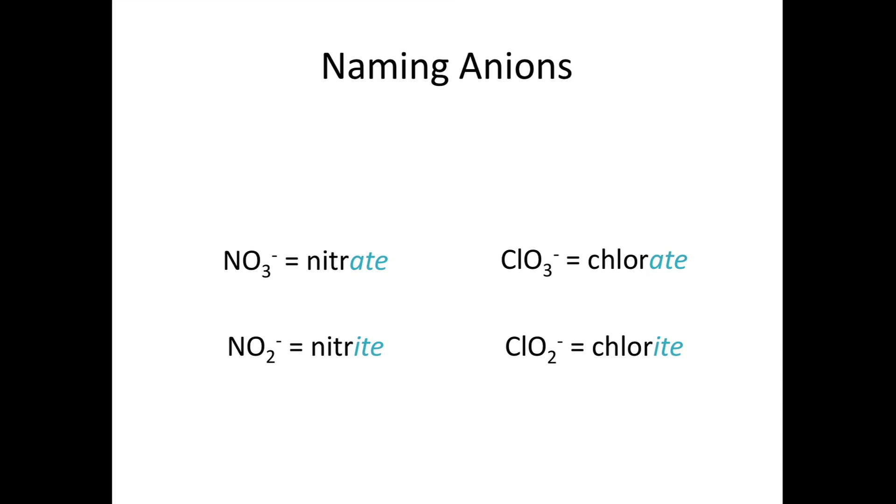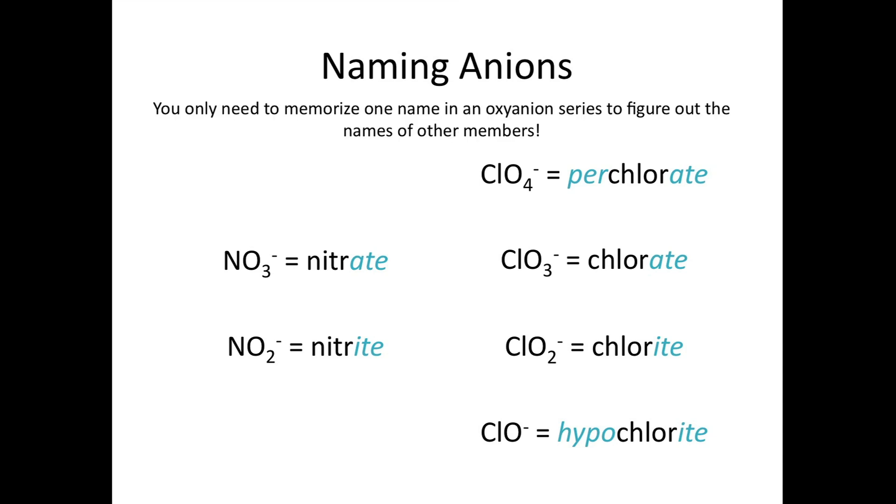Let's look at another example. If ClO3 minus one is chlorate, then ClO2 minus one must be chlorite. If I have even more oxygen than chlorate, ClO4 minus one becomes perchlorate using that per- prefix. And if I have one less oxygen than chlorite, ClO minus one has the name hypochlorite. So just knowing the name of one oxy anion in a series you can figure out the names of the other oxy anions of that element.